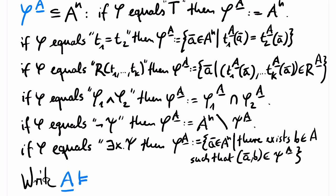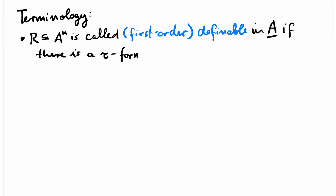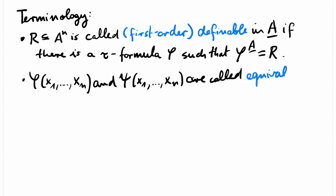We say that A satisfies or models phi of a1 up to an if the tuple a1 up to an is in the relation phi superscript A. Some specialized terminology will be helpful. A relation r of arity n over A is called first-order definable in our structure A if there is a tau formula phi such that phi superscript A equals r. Two formulas phi and psi over the same variables x1 up to xn are called equivalent if phi and psi describe the same relation for every tau structure A.